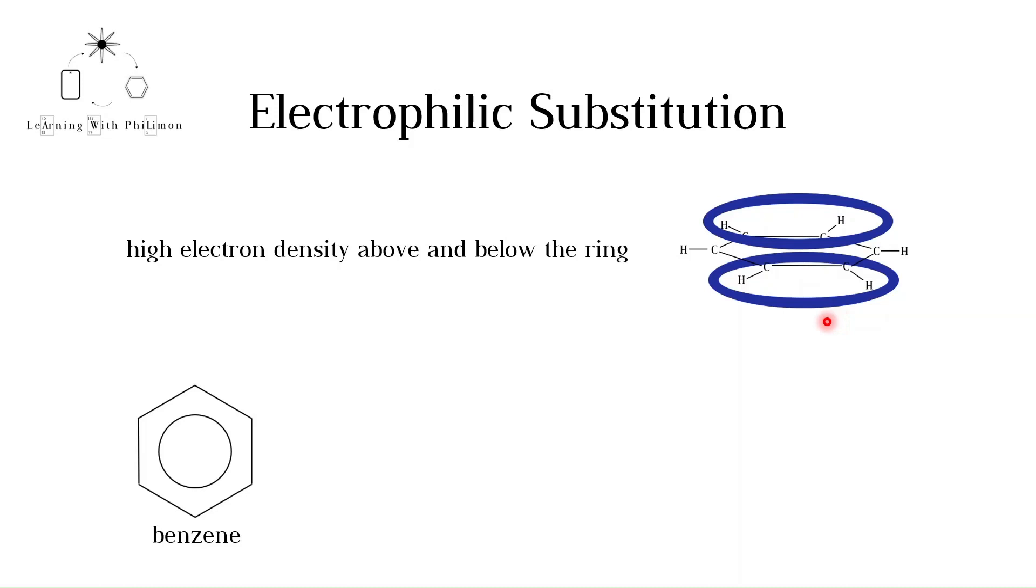When a halogen molecule, such as chlorine, Cl2, approaches the benzene ring, it is polarized. The electrons in the single covalent bond of the chlorine molecule are repelled towards the chlorine further away from the ring. This creates a temporary dipole where one end of the molecule has a partial negative charge denoted by delta minus and one end has a partial positive charge denoted by delta plus. The electrons in the benzene ring are attracted to the more positively charged chlorine atom.